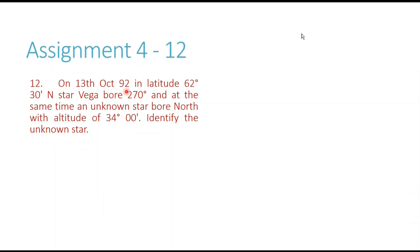On 13th October 1992, in latitude 62 degrees 30 minutes north, star Vega bore 270, and at the same time an unknown star bore north with an altitude of 34 degrees. Identify the unknown star. We will follow exactly the same approach in this question — we will make the rational horizon diagram and input all the information given to us, and the diagram will give us a lead.